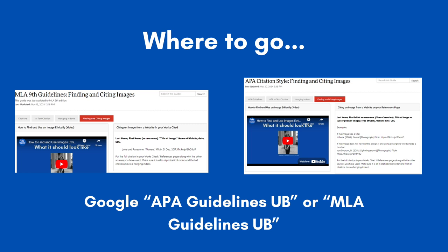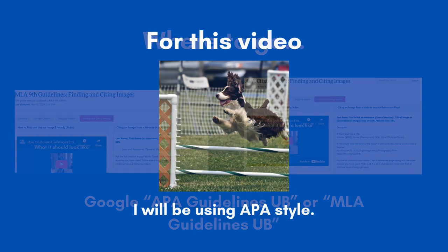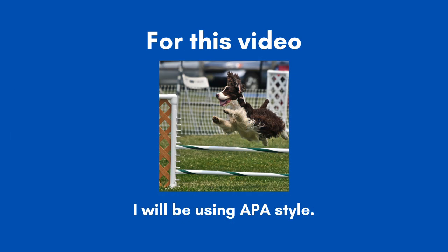Just open up a browser window, go to Google, and search for either APA Guidelines UB or MLA Guidelines UB, and go to the last tab for Finding and Citing Images. There, you will find how the correct format is with examples. For this video, I am only going to demonstrate how to write a full citation in APA format, so use this as a reference for how to do the one in MLA.